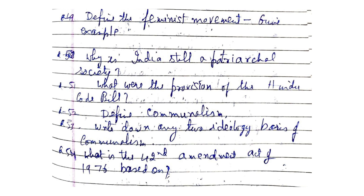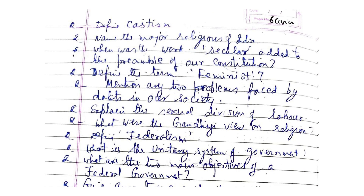Define communalism. Write any two ideological bases of communalism. What is the 42nd Amendment Act 1976? Define casteism. Name the major religions of India. When was the word 'secular' added to the Preamble of our Constitution? Define the term 'feminist'. Mention any two problems faced by Dalits in our society.